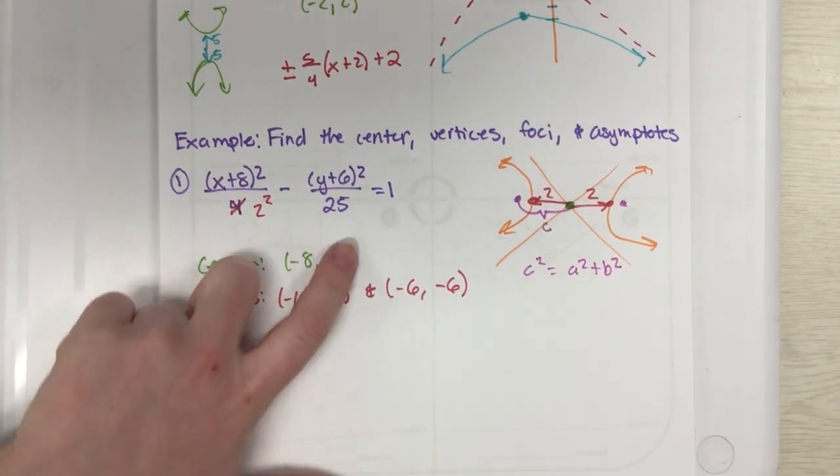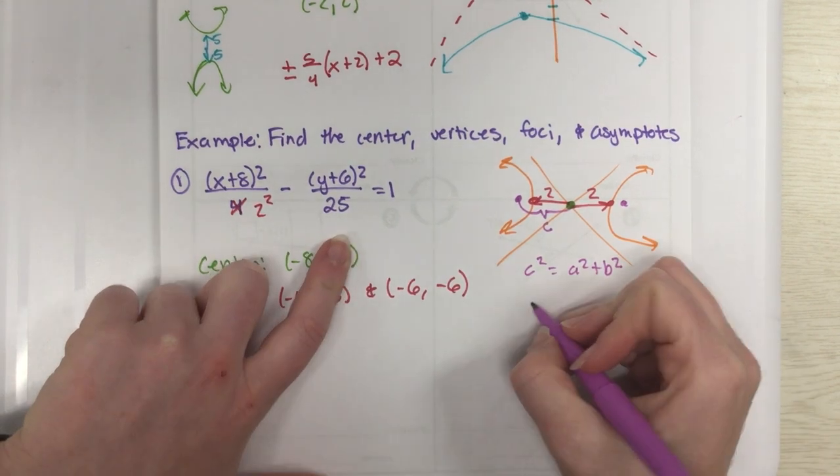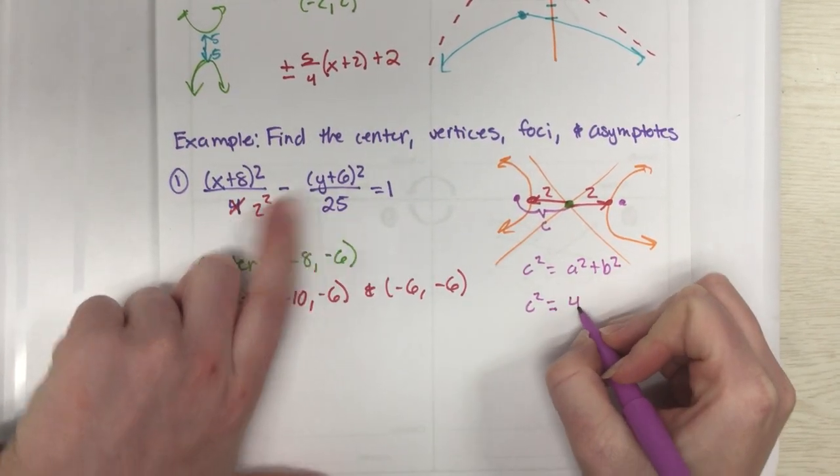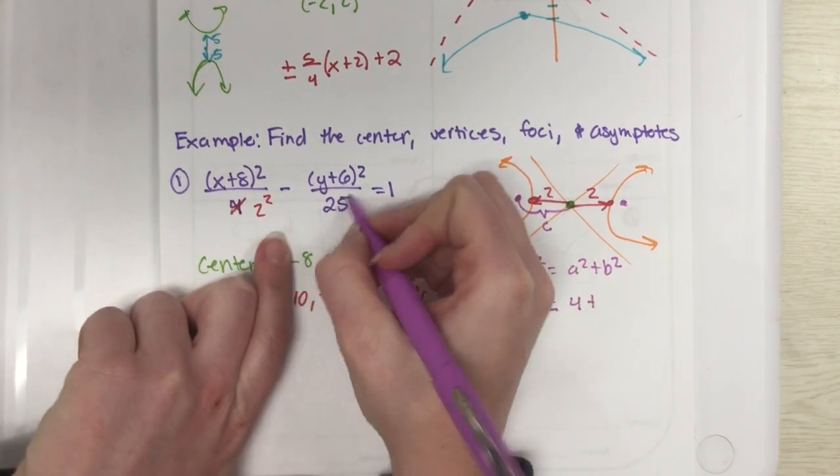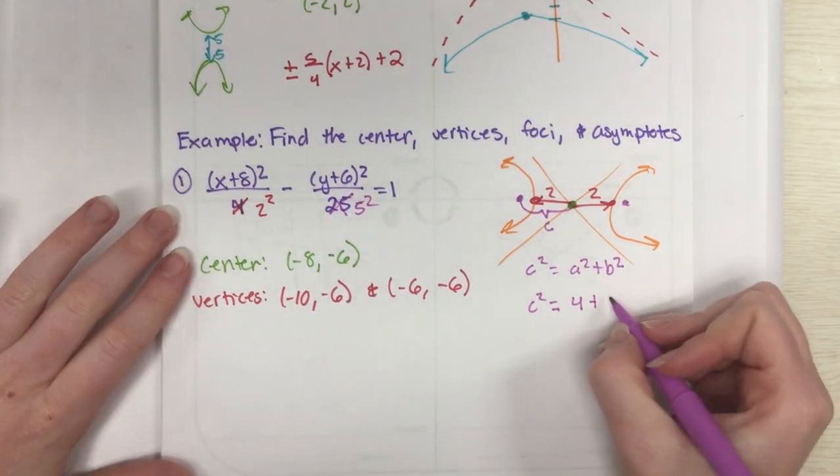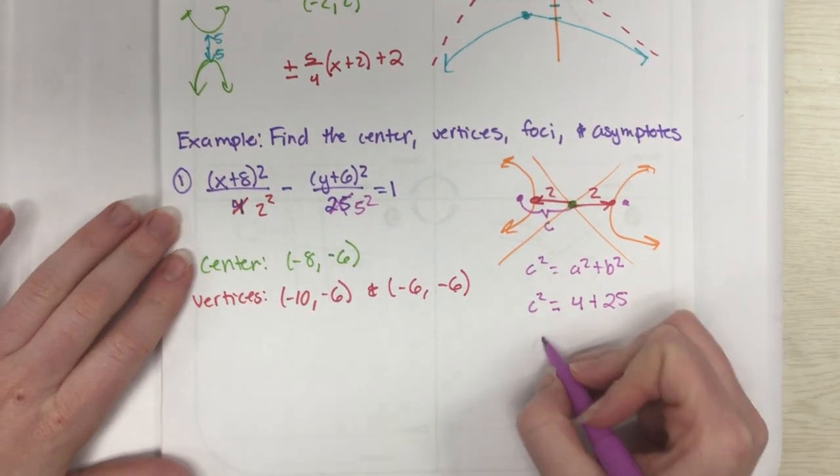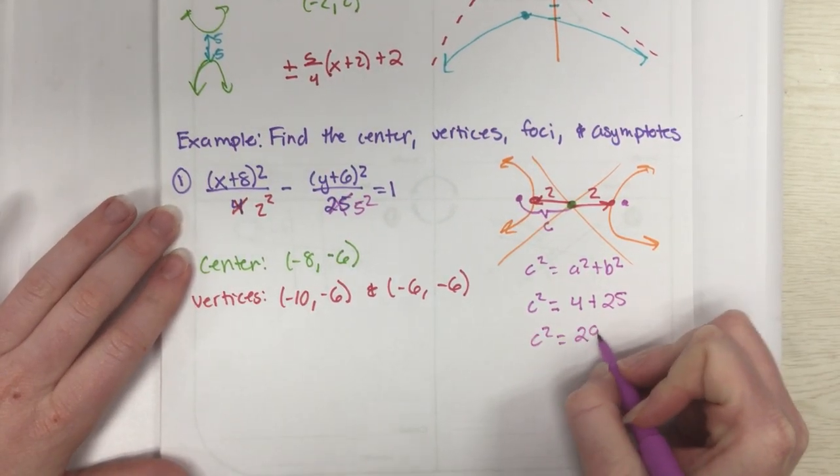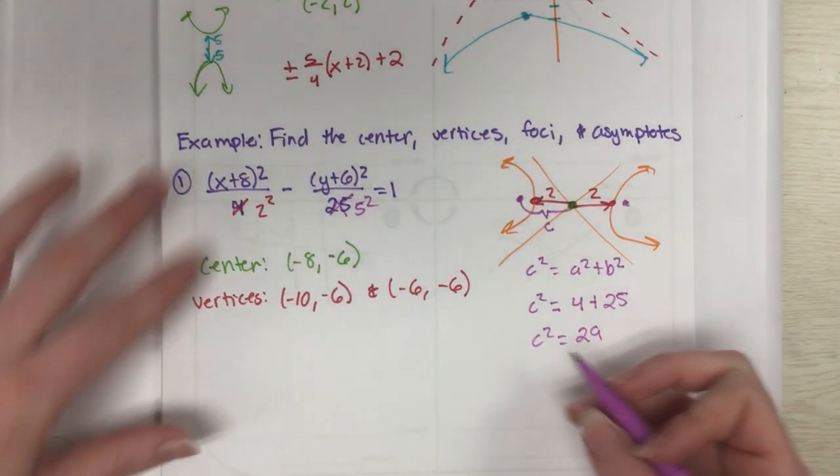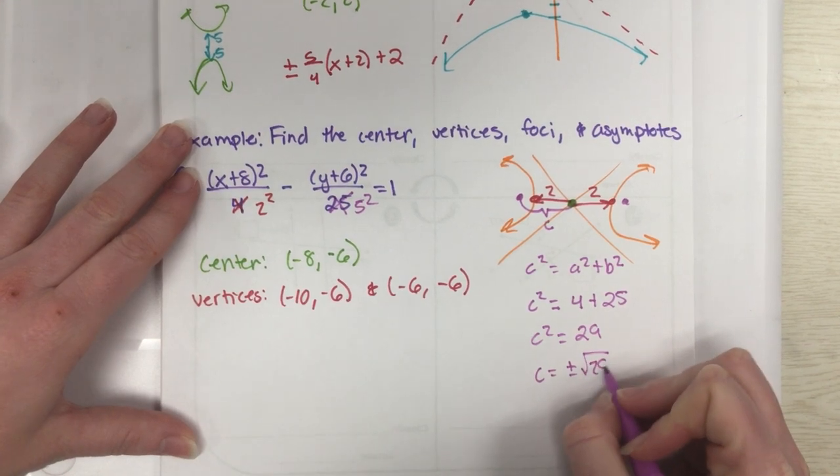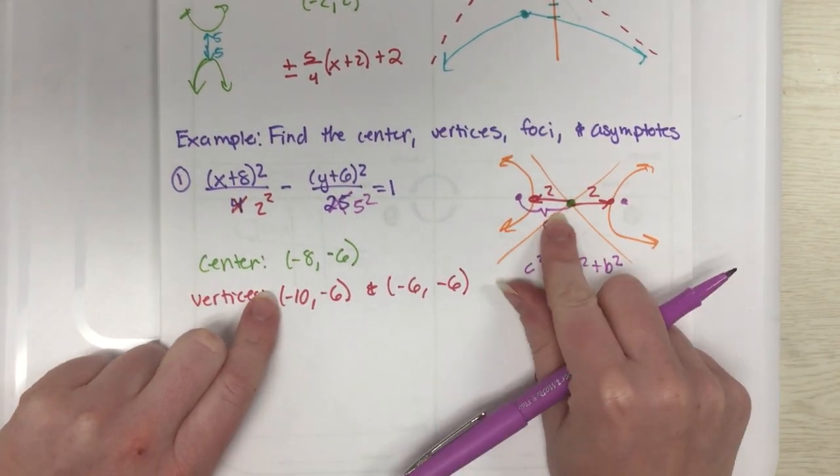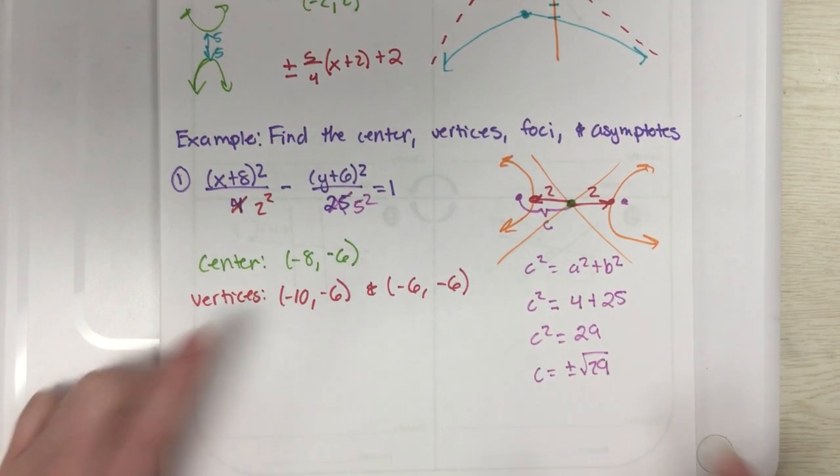All right, remember your a goes with your x, your b goes with your y. So we're going to have c² equals, well, I know it's 2 squared, it'll end up being 4. This is not really, b is not 25, it's 5, but 5 squared is still 25, so I have 4 plus 25, which is 29. I'm going to go ahead and square root it, so c is going to be plus or minus the square root of 29. So, I'm going to take this guy right here, I'm going to go back and forward that big mess.